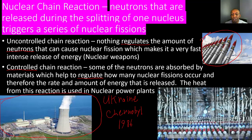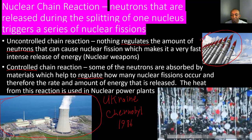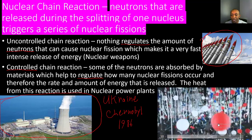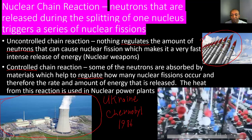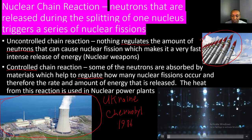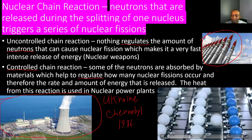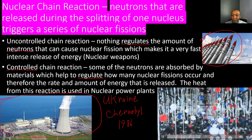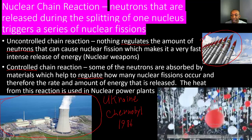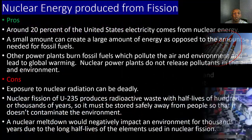Here's an example of a nuclear chain reaction using a ping pong ball being dropped onto other ping pong balls sitting on mouse traps. Notice the amount of energy being released as more ping pong balls are launched and more energy is transferred. This is a great example of what a nuclear chain reaction looks like.